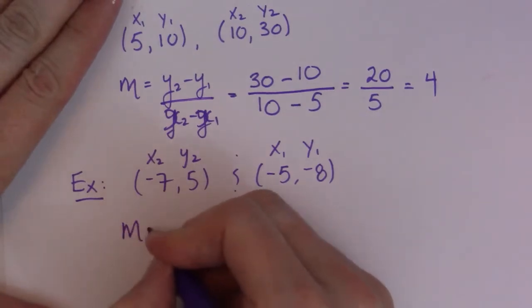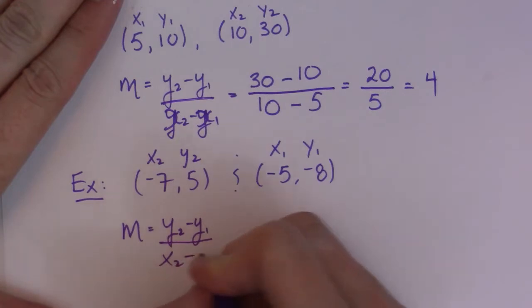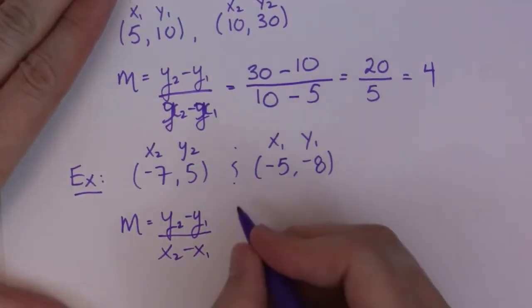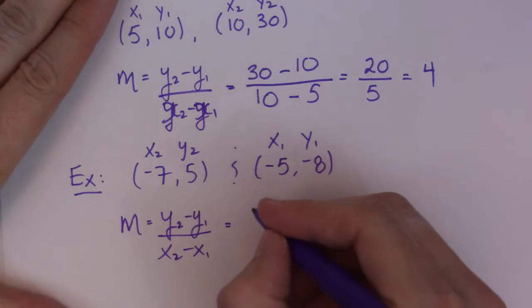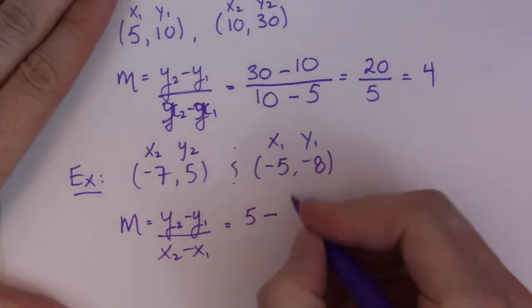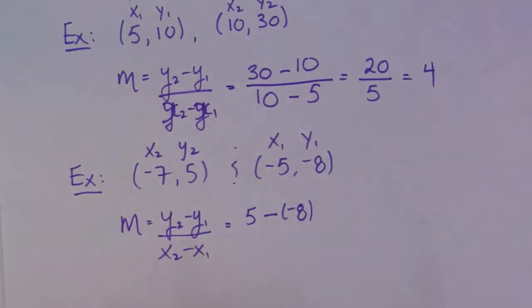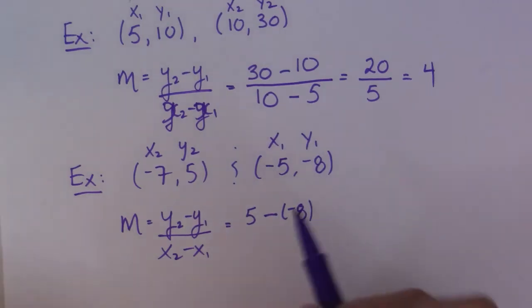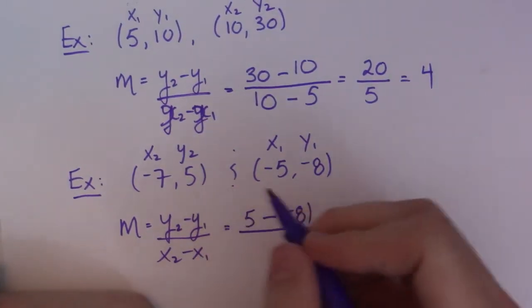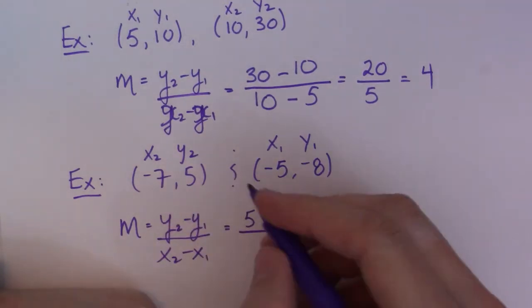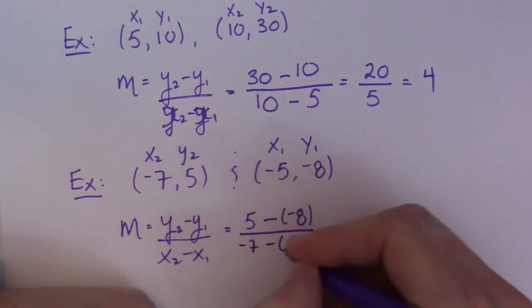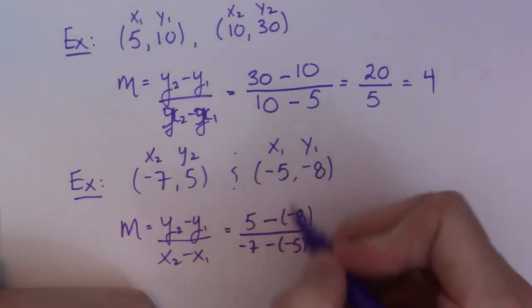So then I get my slope. Y2 minus Y1 all over X2 minus X1. Did not mess this one up. So then my Y2 is 5. Subtract my Y1, which is negative 8. So this is what I want you guys to be careful about. So where we have subtracts in the slope formula, we have to be careful when we're subtracting a negative. That's actually adding, right? And then I have X2, negative 7, subtract 5. So negative 7 subtract negative 5.